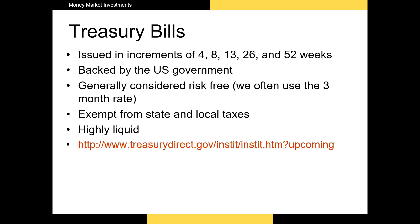A U.S. Treasury bill, or T-bill for short, is issued when the U.S. federal government needs to fund a budget shortfall. Given the size of the U.S. national debt, that shortfall is substantial, so there are a large number of T-bills outstanding at any one time. T-bills have five primary issuances: four weeks, eight weeks, thirteen weeks, twenty-six weeks, and fifty-two weeks.